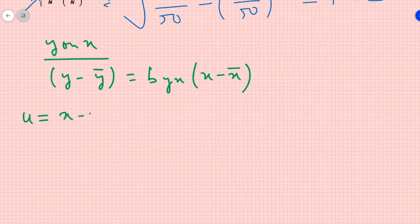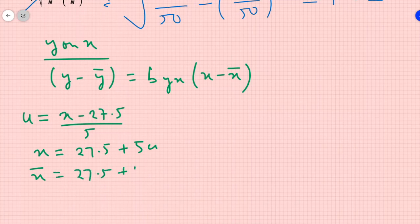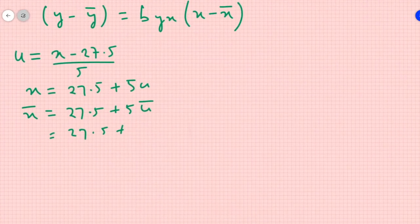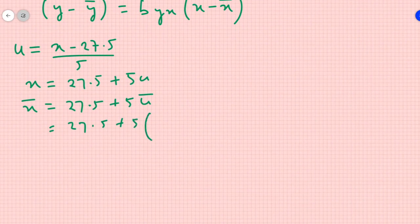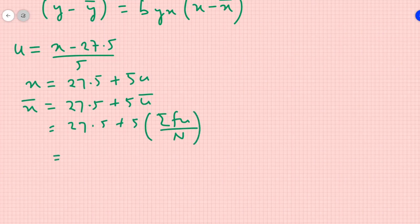Let us see. U equals x minus 27.5 by 5 or x equals 27.5 plus 5u. That means x bar is 27.5 plus 5 into u bar. u bar is nothing but 27.5 plus 5 into summation fu by n. If we substitute all values, we will get 23.8 as x bar. Fine.